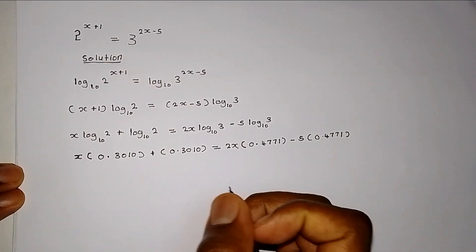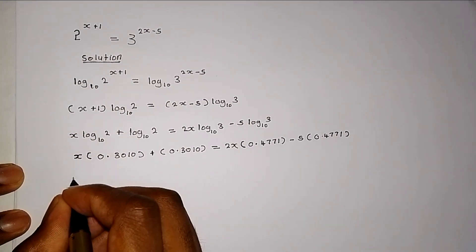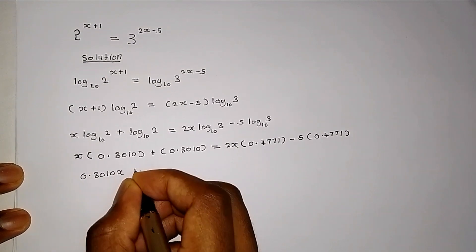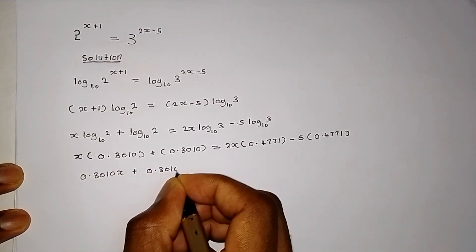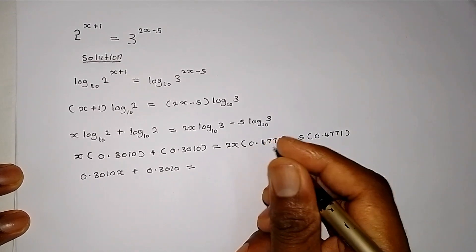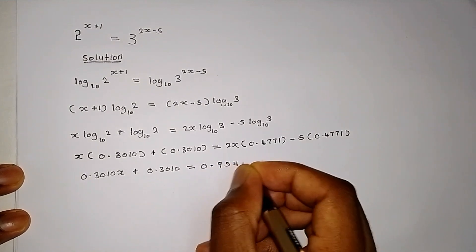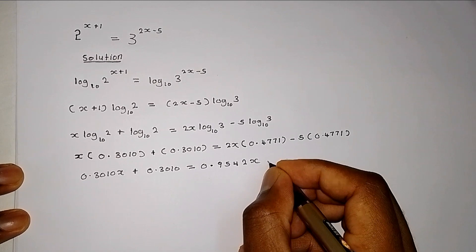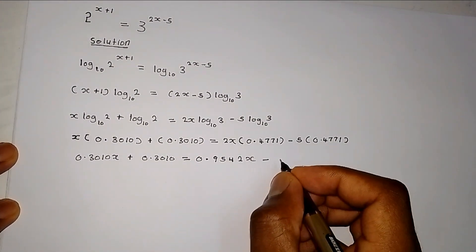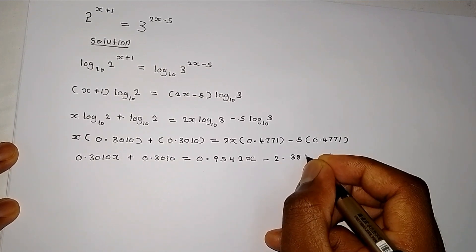Now, let's open the brackets for the values of 5 and x as well. Then this will give us x multiplied by this, you are going to get 0.3010x plus 0.3010, which equals 2x multiplied by 0.4771. What are we going to get after multiplying that? We are going to get 0.9542x minus 5 multiplied by 0.477. What are we going to get after doing that? That will give us 2.3855.